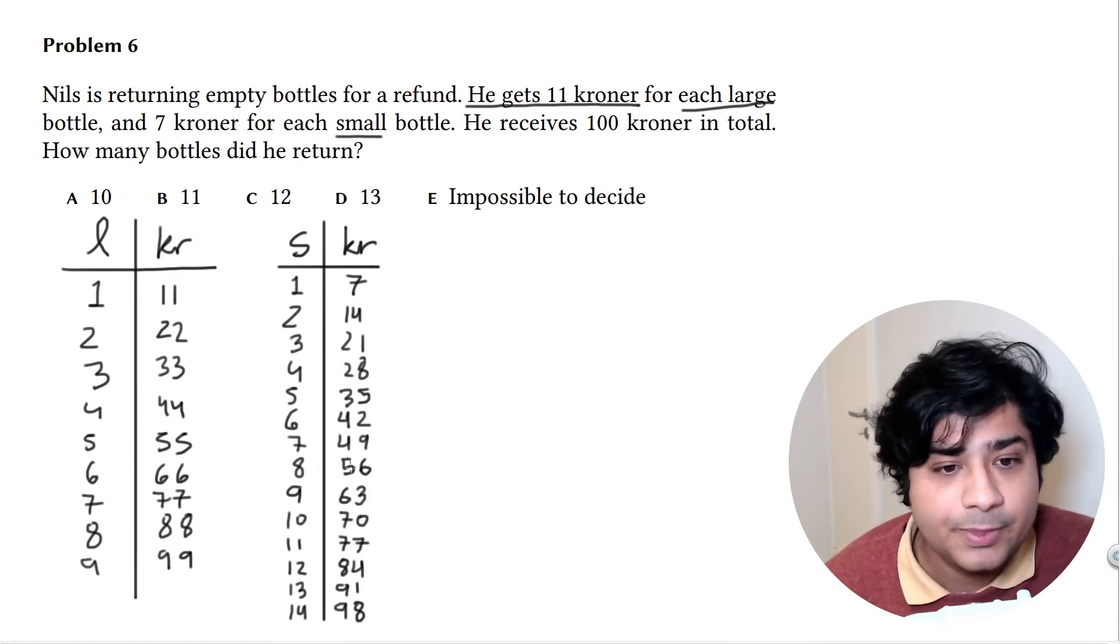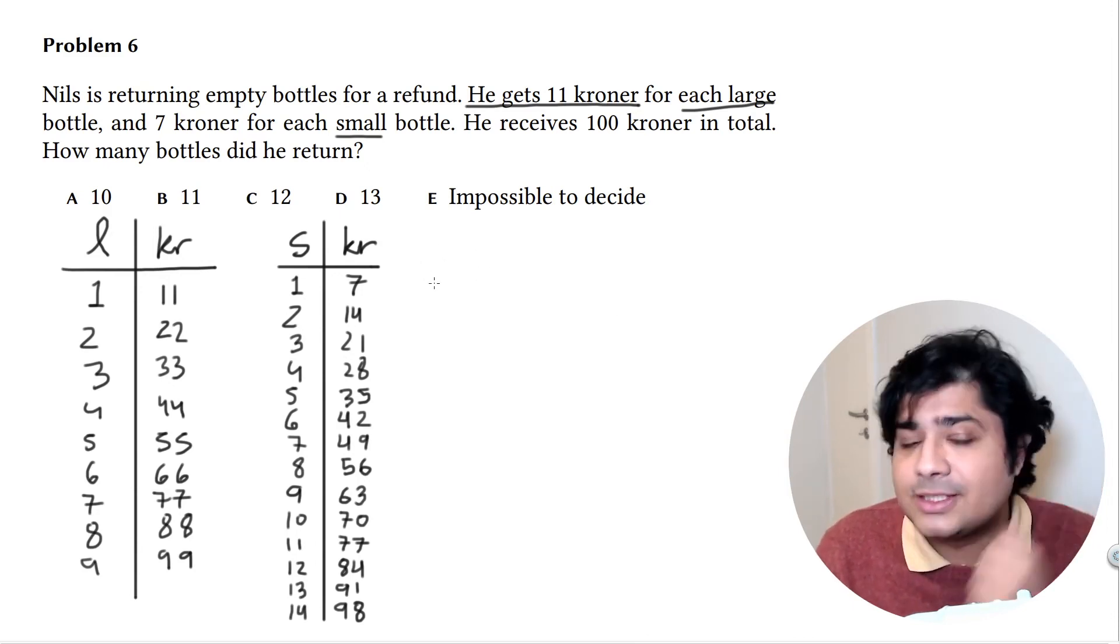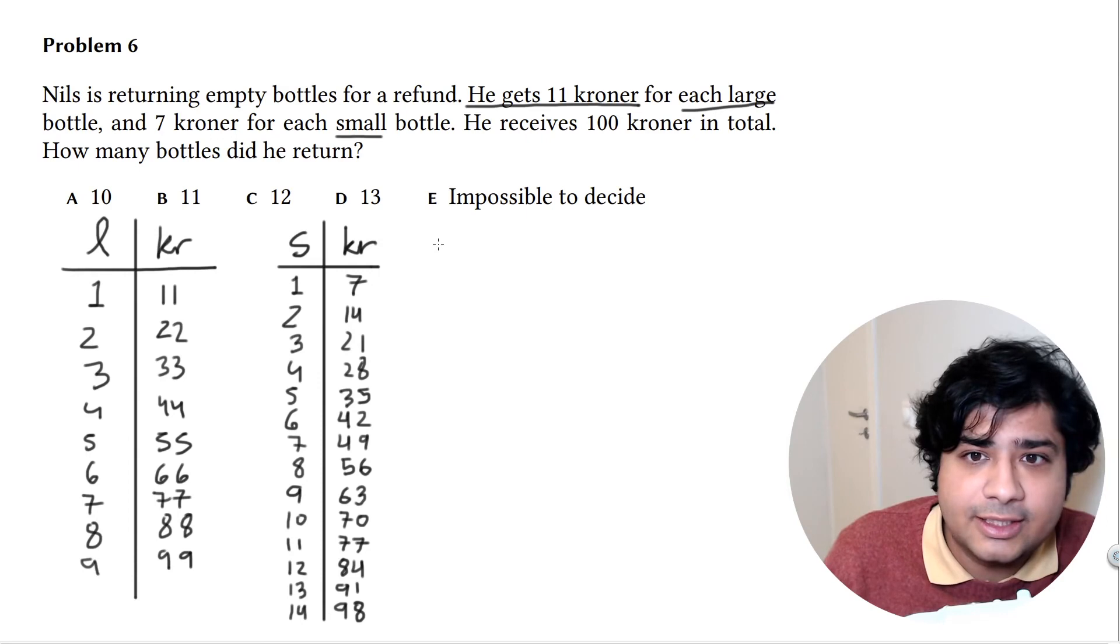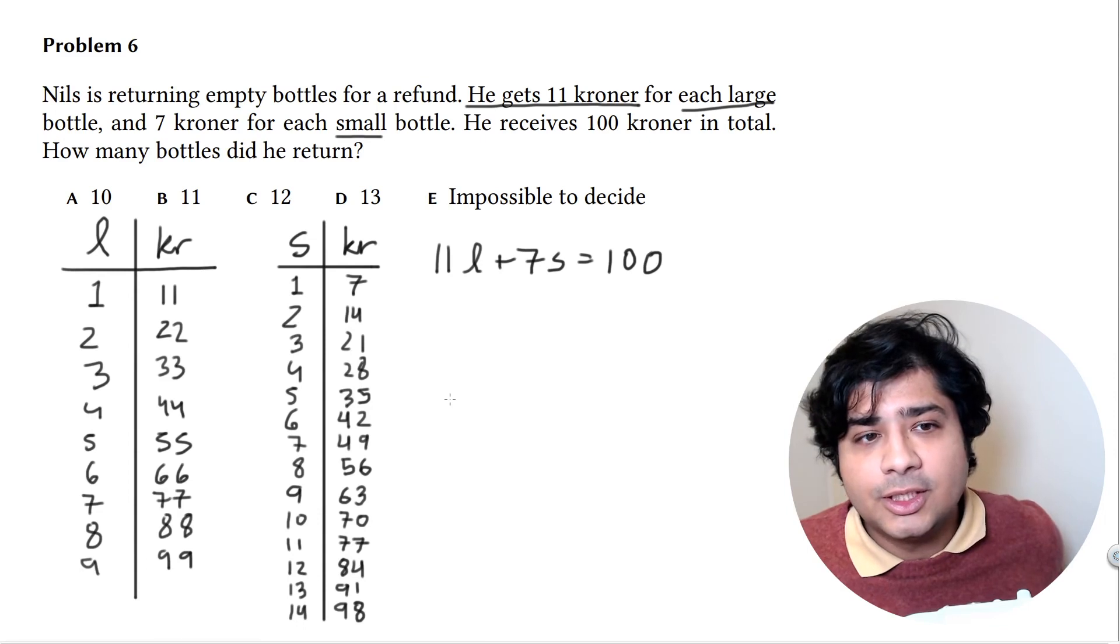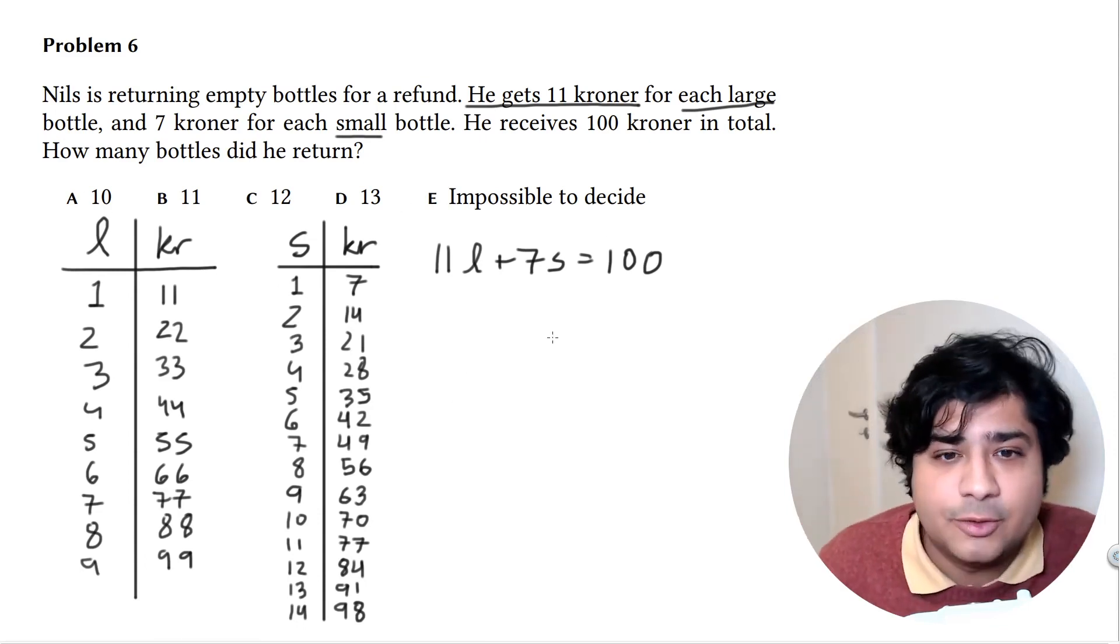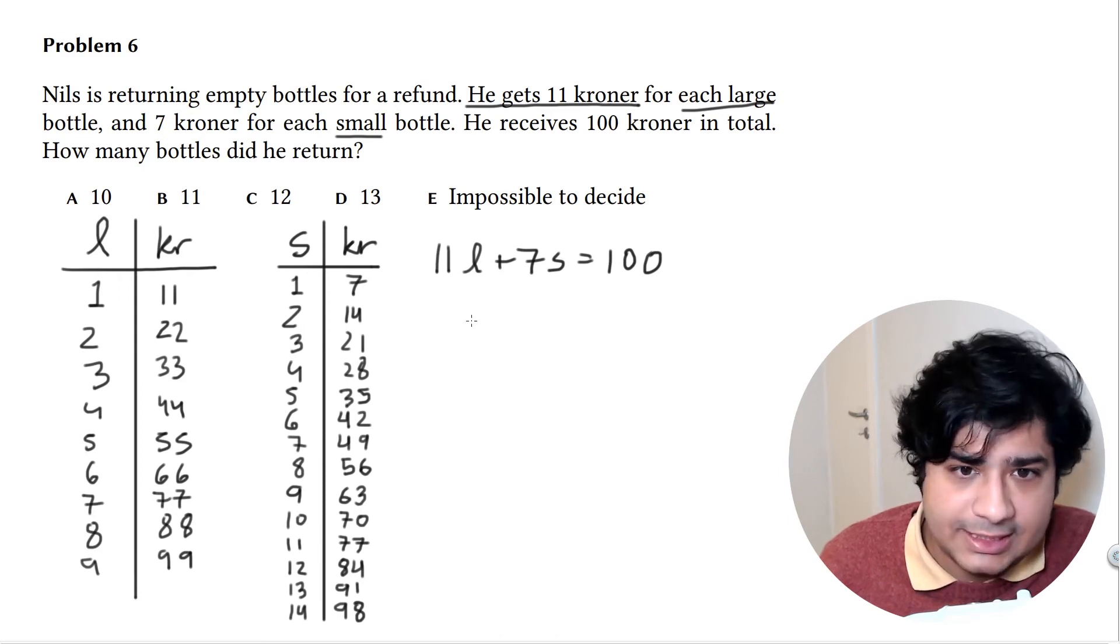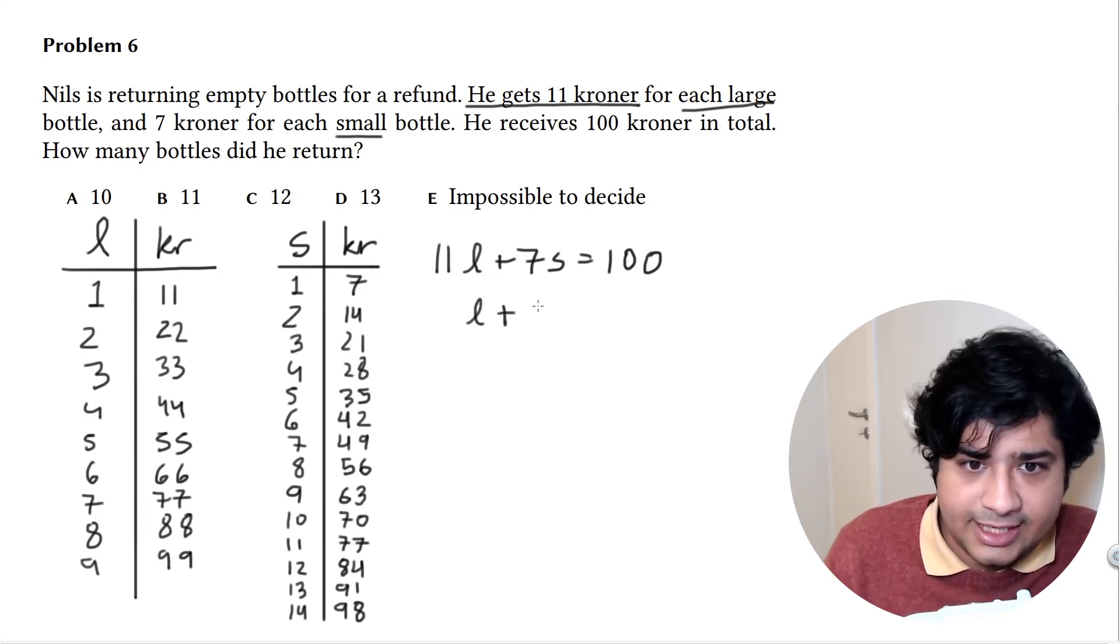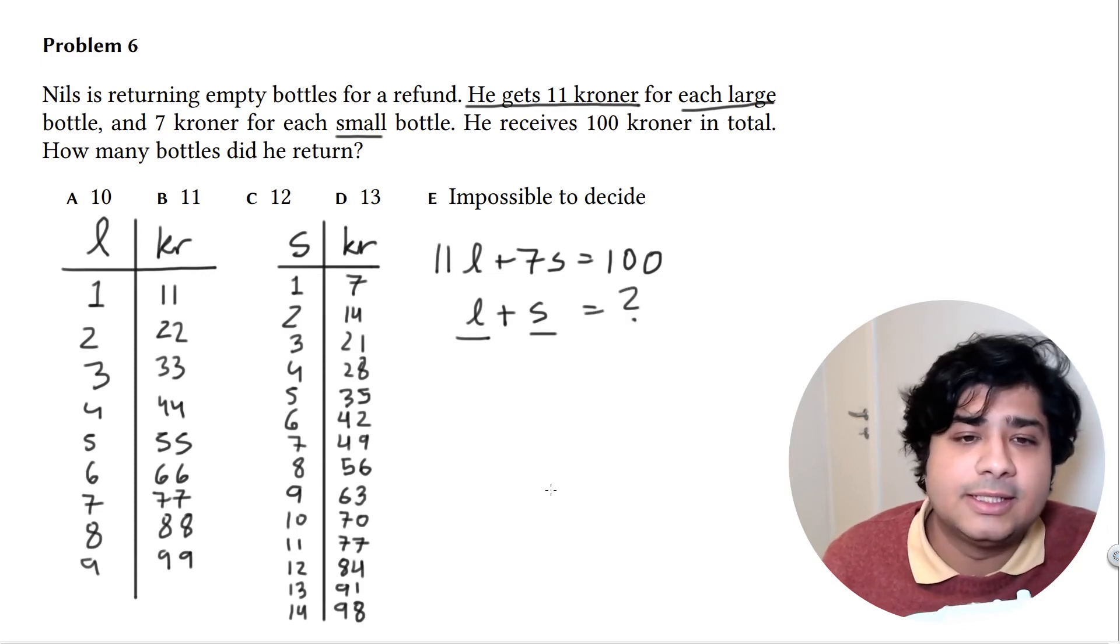What are we looking for? The equation we have to solve is 11L + 7S must equal 100. How many bottles did he return? That's L + S basically—all the large bottles and all the small bottles. That's the final answer.